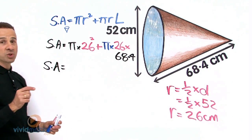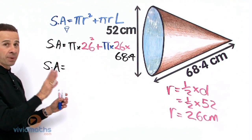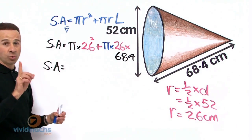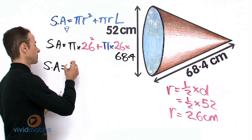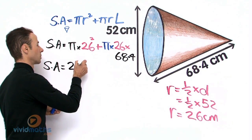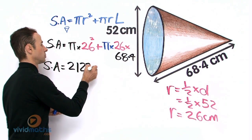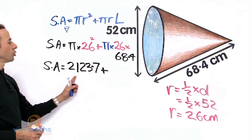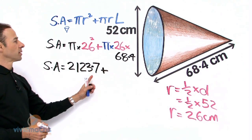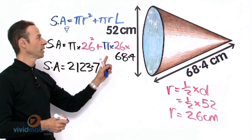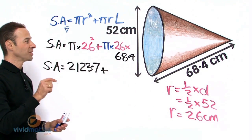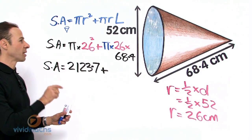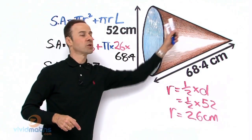So let's go π times 26 squared. That part only is going to give us, to one decimal place, 2123.7. Now let's work out the curved part here, which is πrL, π times 26 times 68.4. That part, the curved surface of the upper cone area.